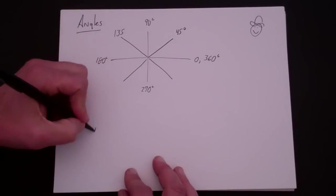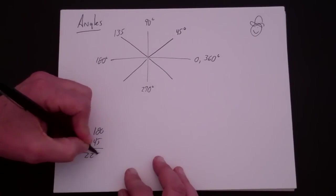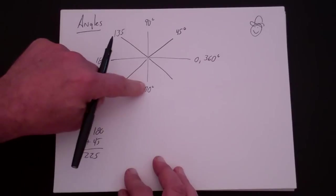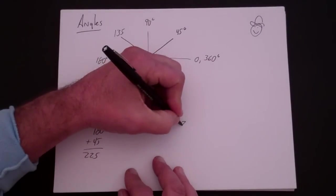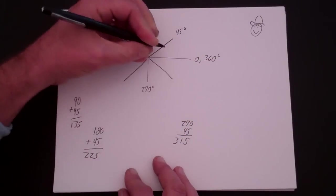This is 180 plus 45. 180 plus 45 is 225. This is 270 plus 45, which is 315.